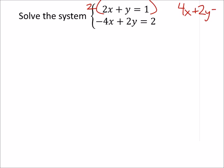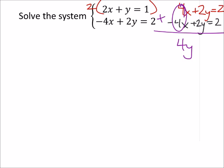And then the bottom equation is negative 4x plus 2y equals 2. Now when I add these two together, my x's eliminate and I have 4y equals 4. Dividing both sides by 4, I get y equals 1.